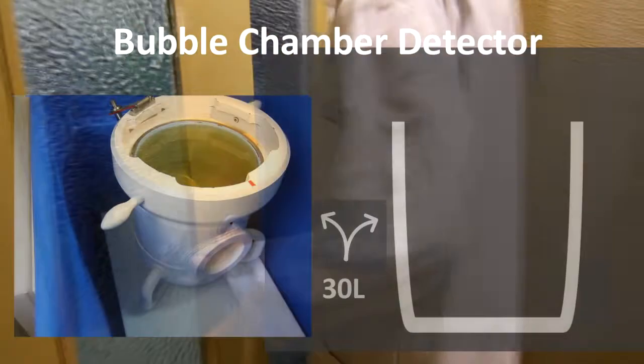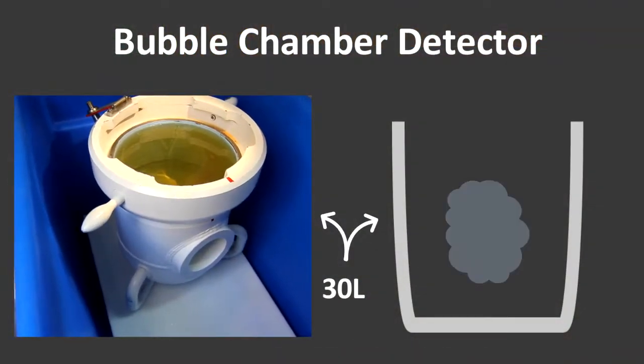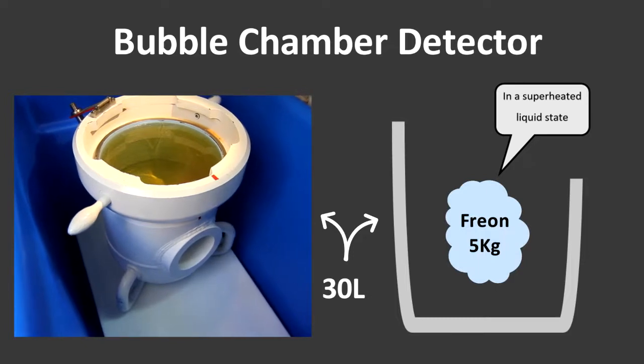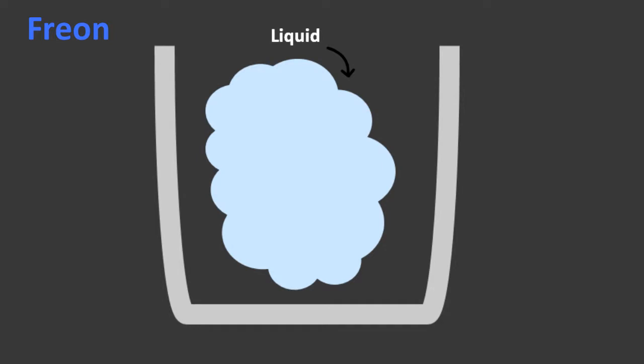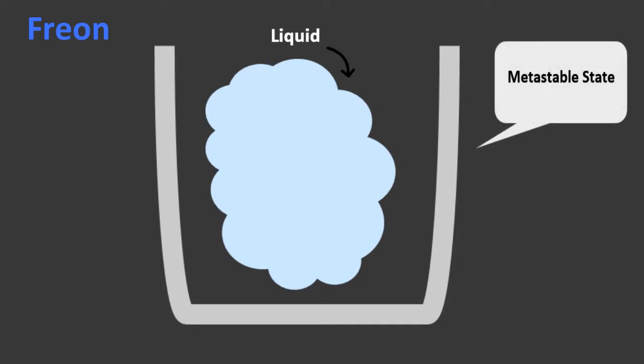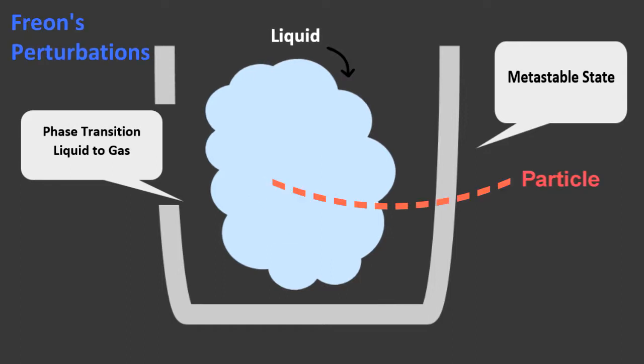The bubble chamber detector I am working on consists of a metal chamber with approximately 30 liters of capacity with 5 kg of superheated liquid freon as its active mass. This means that freon is in a metastable state that with the slightest perturbation will undergo a phase transition. This perturbation can be caused by the passage of a particle through the freon that scatters a freon's nuclei depositing energy.